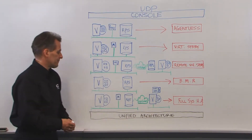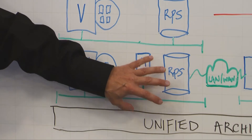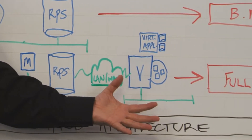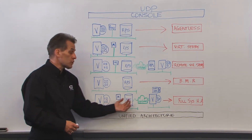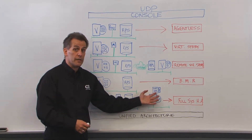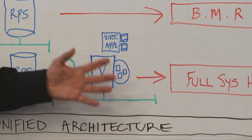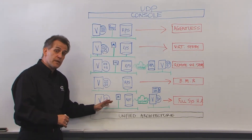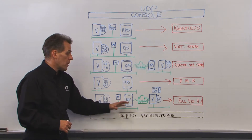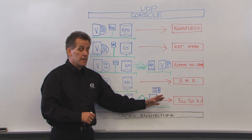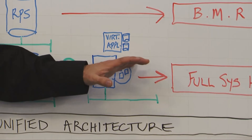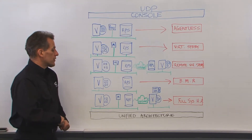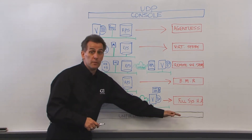Finally, we come to full system high availability. The data stored in your production site is replicated across to a hypervisor in your disaster recovery site. The backups of the virtual machines are stored on a virtual appliance in the disaster recovery site. Like virtual standby, if something happens to one of these virtual machines, the monitor gets that last backup and stands the guest up on the fly in your disaster recovery site. All of this is based on unified architecture building blocks.